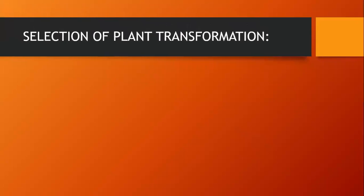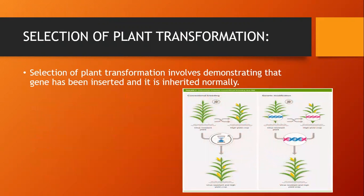Selection of plant transformation involves demonstrating that the gene has been inserted and is inherited normally. In normal breeding, for example, a virus resistant plant and a high yield crop are bred together to make a virus resistant and high yield crop. But in genetic modification, a specific gene of interest is taken from the virus resistant plant and another specific gene is taken from the high yield crop, combined together to make a new recombinant DNA, which is then put in the plant to make a new genetically modified organism that is both virus resistant and high yielding.